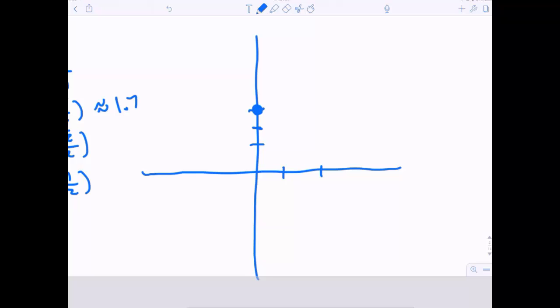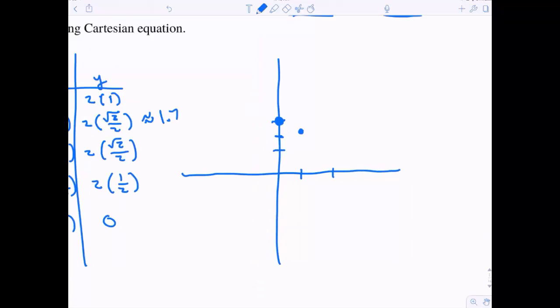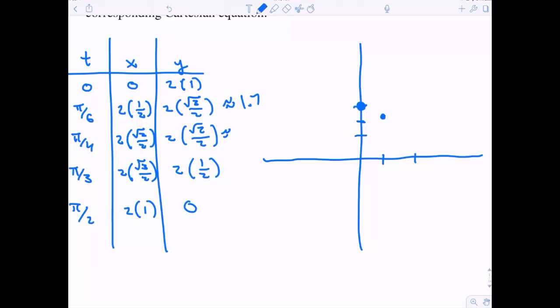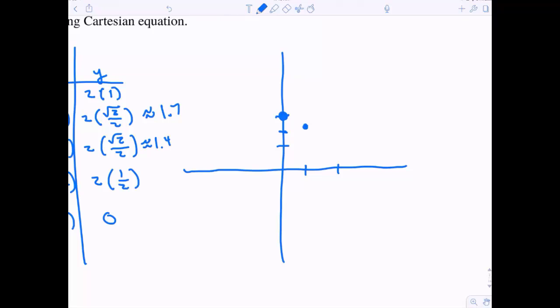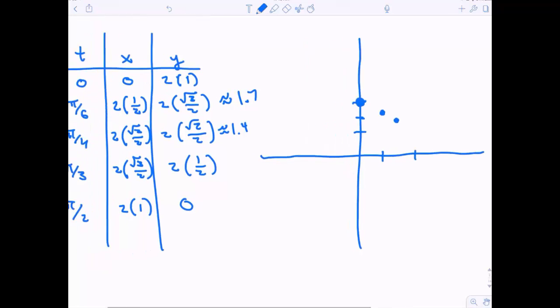Now square root of 2 is around 1.4. So this is 1.4, 1.4. It's that point. And then this is around 1.7 for my x value and 1 for my y value. So 1.7-ish and 1.